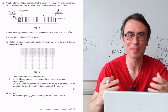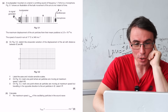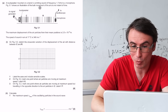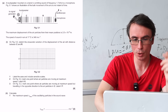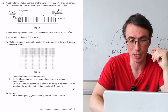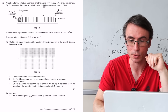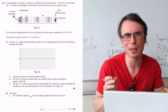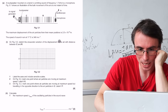Let's do some A-level physics paper 3 practice. Here is quite a tricky question. We have a loudspeaker mounted on a bench emitting sound at a frequency of 1.7 kilohertz to a microphone. Figure 5.1 shows an illustration of the bulk movement of the air at one instant of time. We have the loudspeaker, compressions and rarefactions. Longitudinal waves can be quite tricky to visualize. The maximum displacement of the air particles is given.